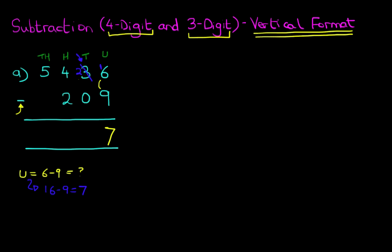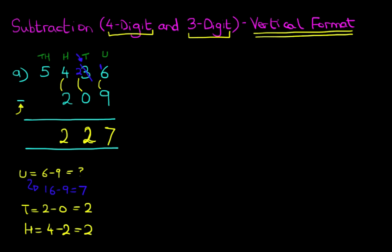Now we're going to do the tens column. We've got two minus zero. Two minus zero is two. Now we're going to do the hundreds column. For the hundreds, we have four minus two. Four minus two is two. Now as for the thousands, it's five minus zero, so that remains five. Therefore, 5,436 minus 209 is 5,227.